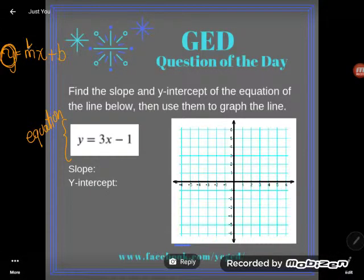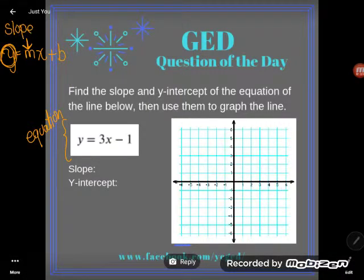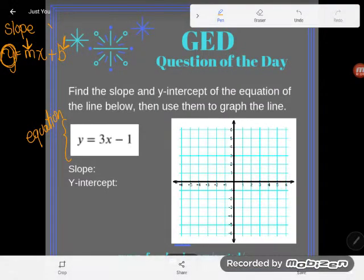The m, the number multiplying with x out here, is going to be the slope. And the b, the number adding or subtracting with x, is going to be the y-intercept.